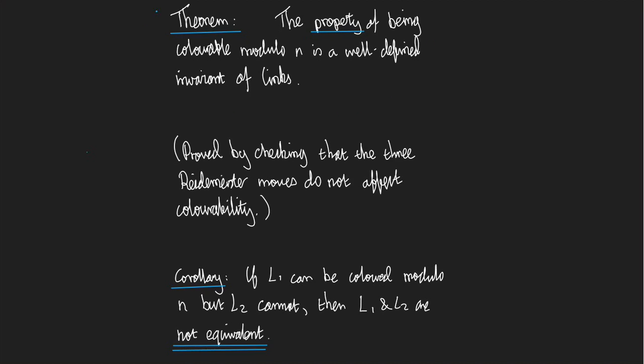How does the proof of this theorem work? Well, you should be able to guess. We prove it by checking that the three Reidemeister moves do not affect colorability. So if we have two diagrams related by a Reidemeister move, one has a coloring modulo n, we prove that the other one has a coloring modulo n, and vice versa.